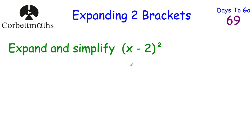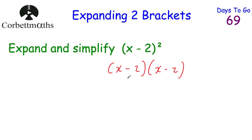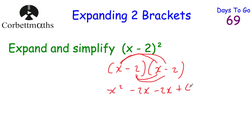Let's look at our next one: expand and simplify (x − 2)². If you want, press pause and try it yourself. If you've got something squared, that means multiply it by itself. So I write (x − 2)(x − 2) and then expand. x times x is x squared; x times minus two is minus 2x; minus two times x is minus 2x; and minus two times minus two is positive four. Collecting the like terms in the middle — minus 2x take away another 2x — gives us x² − 4x + 4.